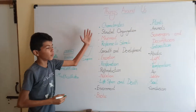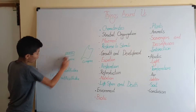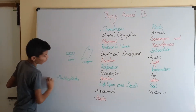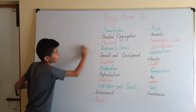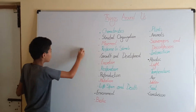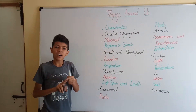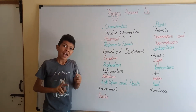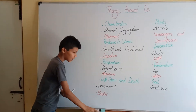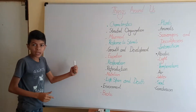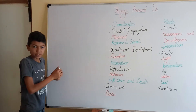Then we have movement. All living beings move. There are two types of movements: one is internal and another is external. External movement is movement which we can see, just like you moving or the leaves of a tree moving.